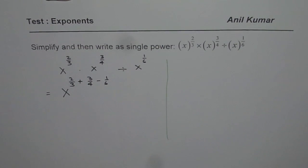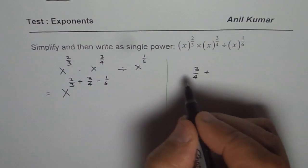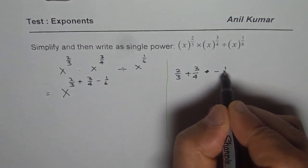So we need to take common denominator and then find the answer. So we have 2 over 3 plus 3 over 4 minus 1 over 6.